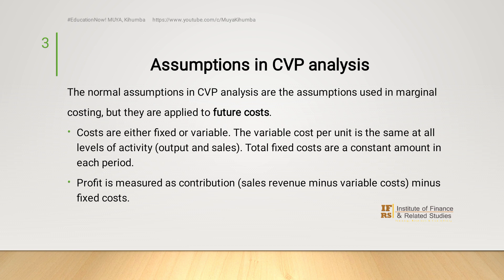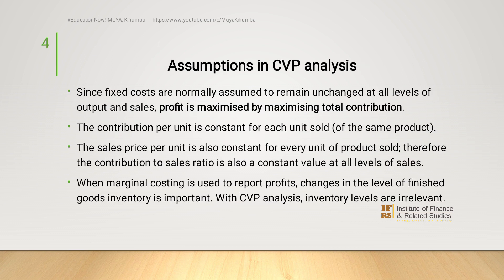Total variable cost will change as output level changes — it will increase as output level increases — while total fixed cost will remain constant in each period. We also assume that profit is measured as contribution, and contribution is computed as sales minus variable costs. Profit is then contribution minus the fixed costs. Other assumptions include that fixed cost remains unchanged at all levels of output, and therefore, for the firm to maximize profit, it must maximize total contribution. Contribution per unit is assumed constant, as is the selling price for each product, and therefore the contribution-to-sales ratio will remain constant at all levels of sales.